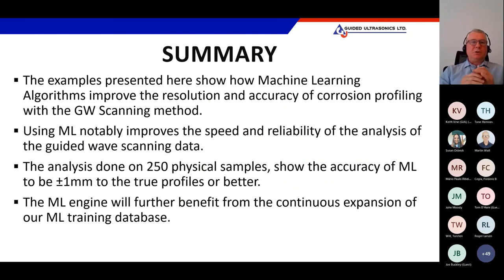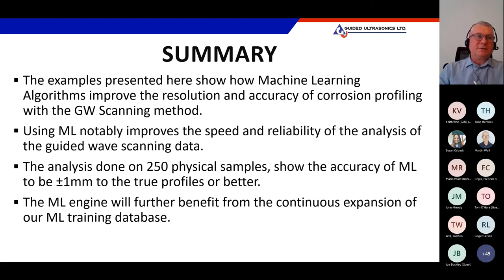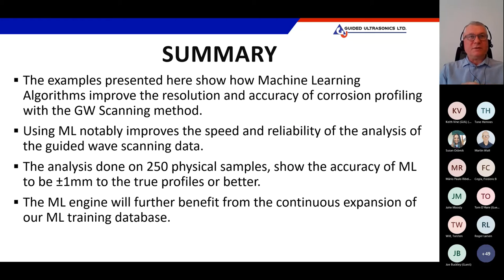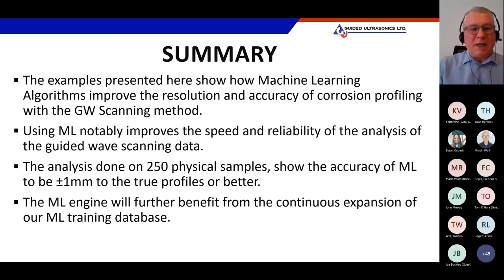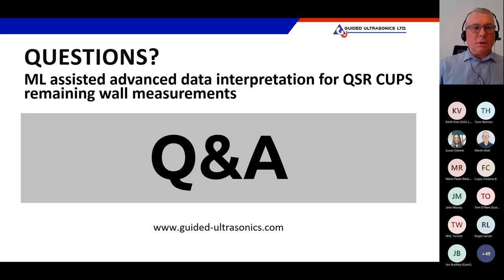In summary, machine learning algorithms improve the resolution of corrosion profiling, and using machine learning notably improves the speed and reliability of analysis. Computers are far faster than humans at number crunching. Across 250 physical industrial samples, even in the most difficult cases, the machine learning result was within one millimeter of the true profile, and performance will improve further as the training database expands.